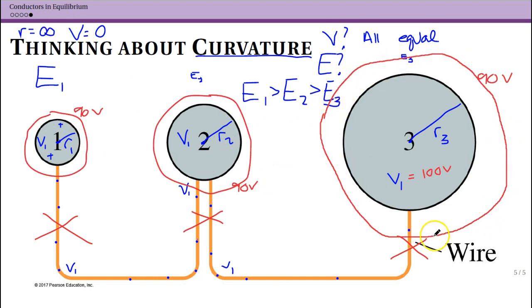So what will the equipotentials look like around these? So I'm not very good at drawing here on the computer, but let's say that our potential that the spheres are at is actually 100 volts. So maybe the first equipotential I draw is at 90 volts.